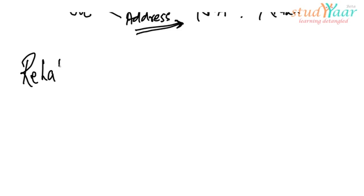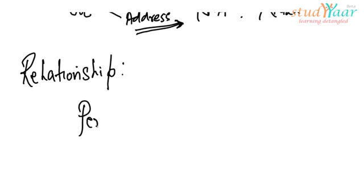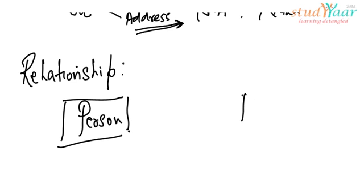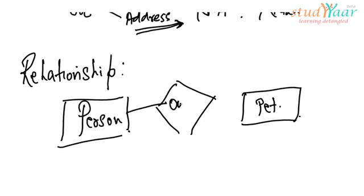A relationship basically models the interaction between one or more entities. To explain this with an example, let's suppose we have a person and we have a pet. The relationship between the person and the pet is that a person owns a pet. By owning a pet, this person is interacting with a particular pet.